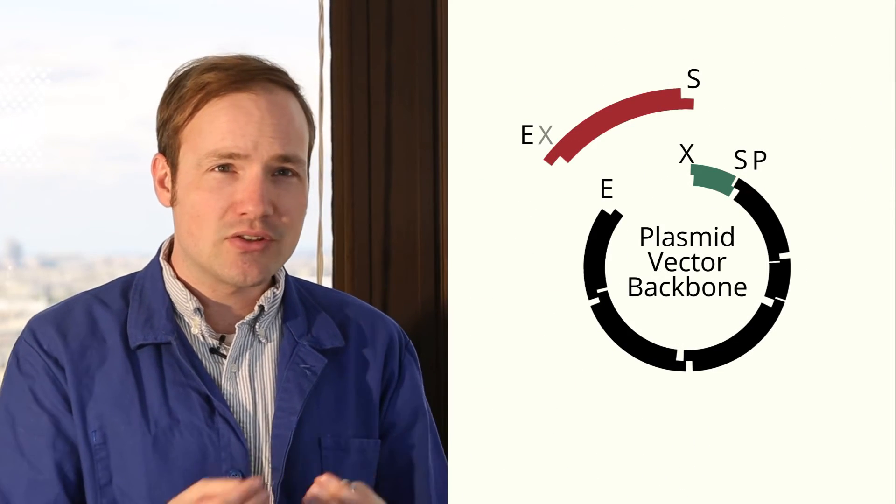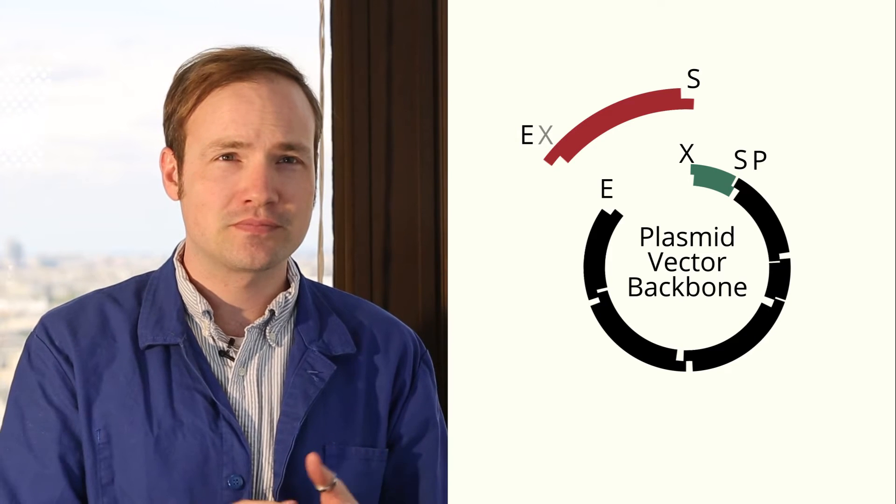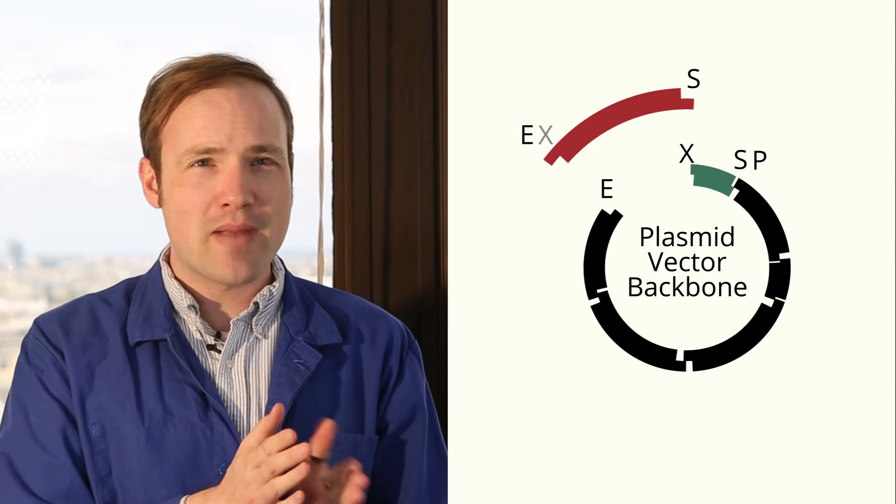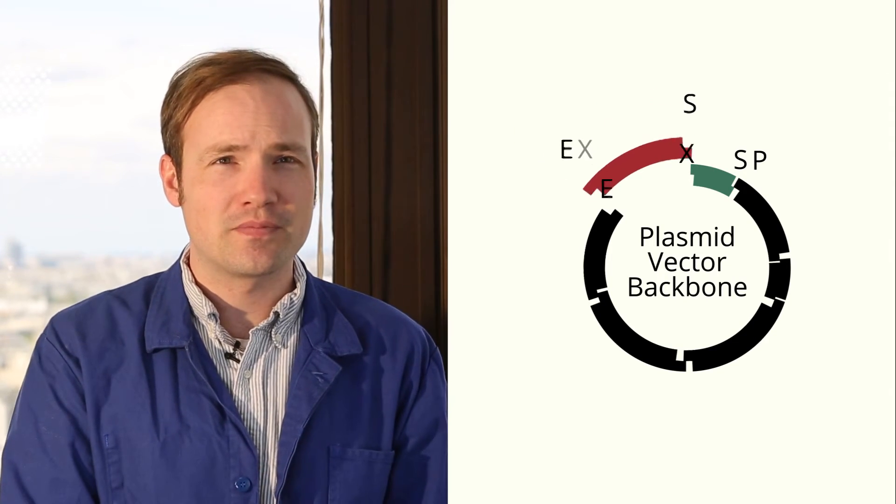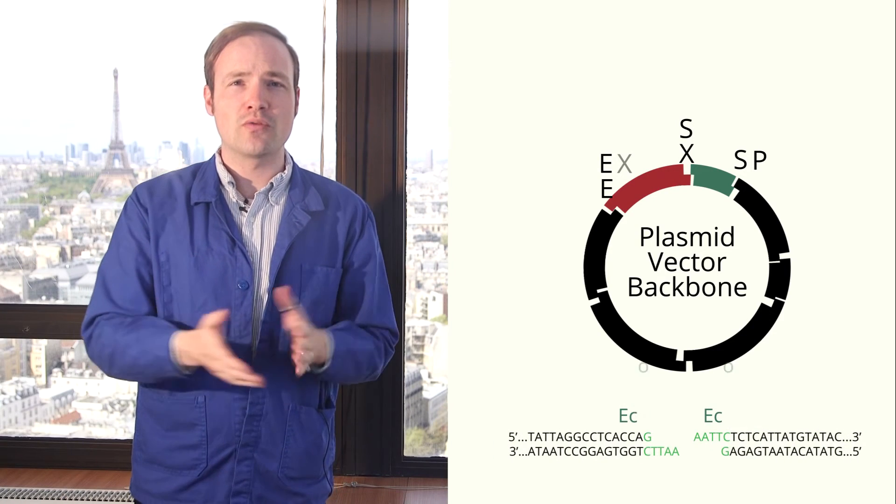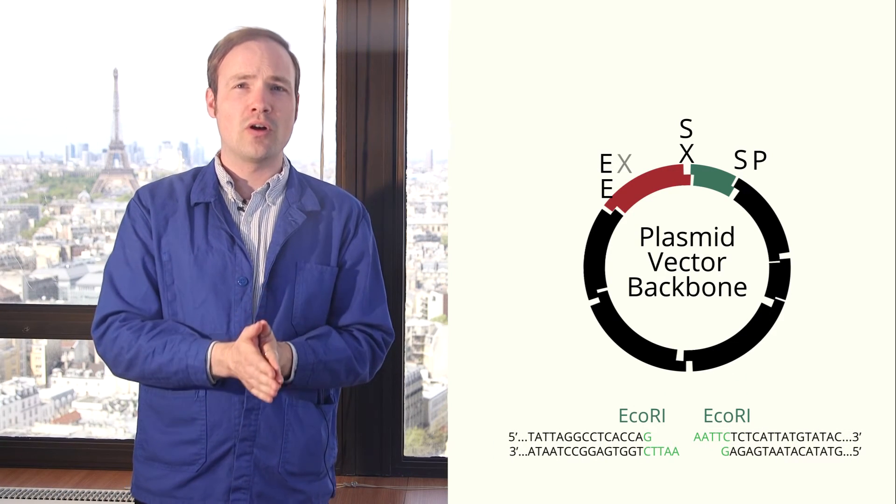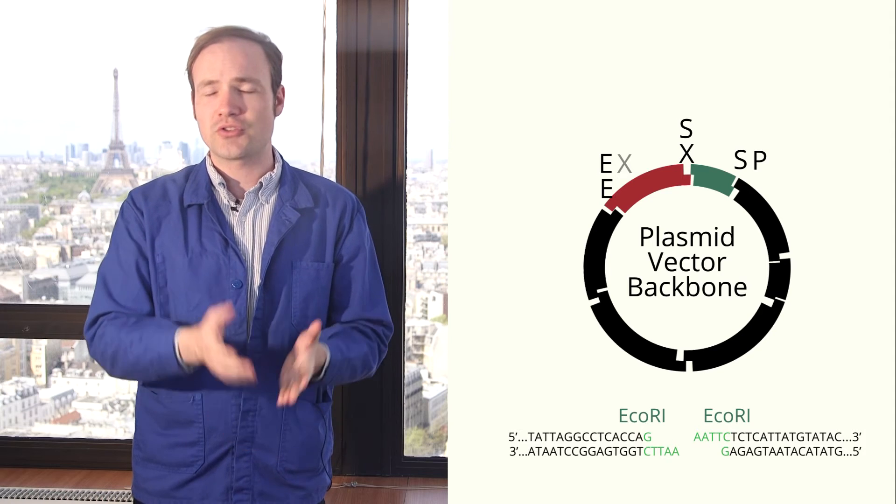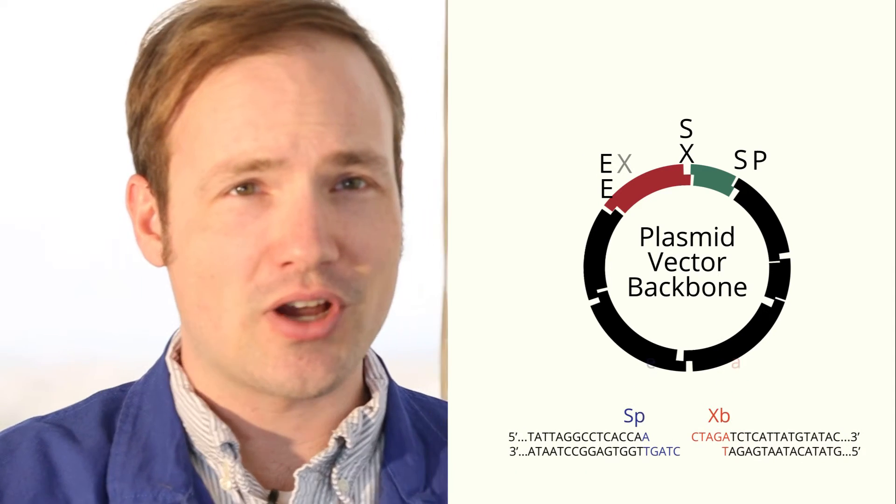Finally, we mix the insert and the vector backbone together. Let's see what happens. Matching sticky ends stick together. That means the EcoR1 overhang of the insert hits the EcoR1 overhang of the vector. Just like we might expect. Now look at this on the other side.